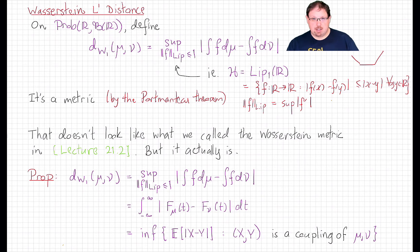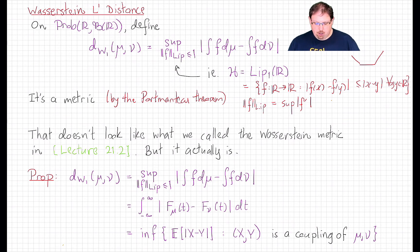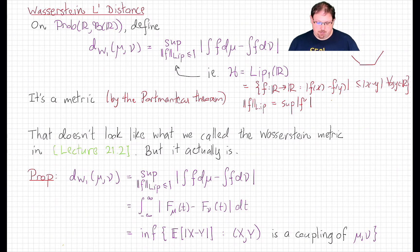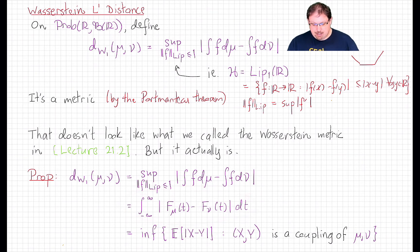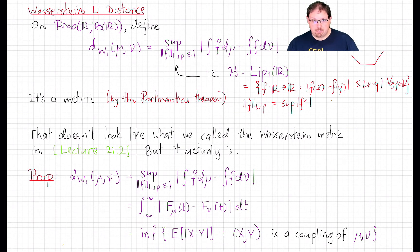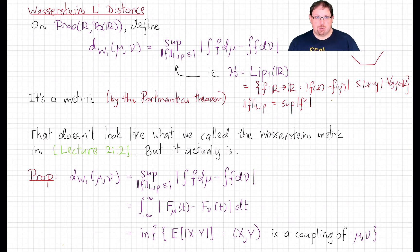Now it might look confusing because there's something ostensibly different that we called the Wasserstein distance in Lecture 21.2. These two are actually the same — it's a major theorem that this dual metric, taking the supremum over testing against all Lipschitz functions, also can be calculated by taking the infimum L1 difference between two random variables, where the infimum is taken over all couplings of the two measures. That's what we called the Wasserstein L1 distance before. There's also an intervening definition equal to both: it's the L1 distance on the real line with respect to Lebesgue measure between the CDFs. We could spend a whole lecture proving these three are equal, but I recommend instead reading books on optimal transport theory or concentration of measure.